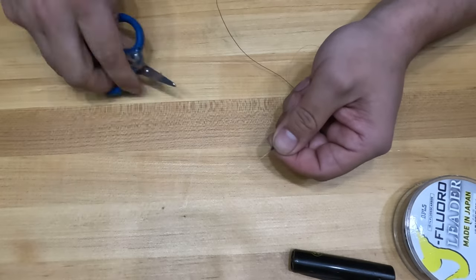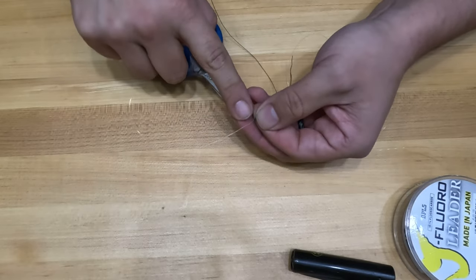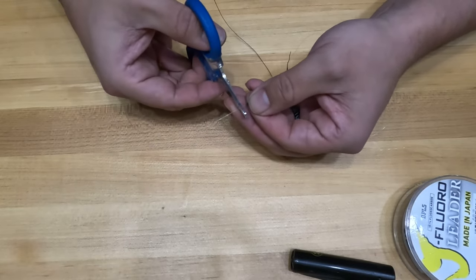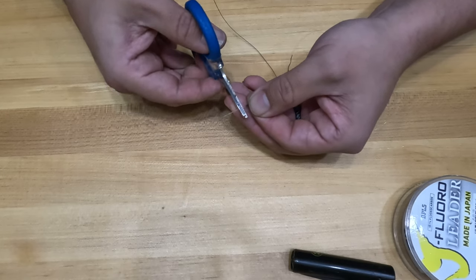To finish this knot, we're going to clip off the tag ends, ensuring to leave about a couple millimeters at the end and I'll show you why in just a second.